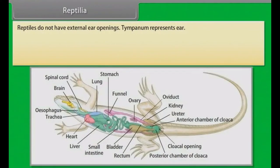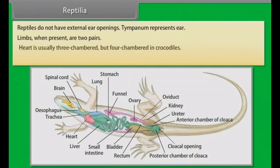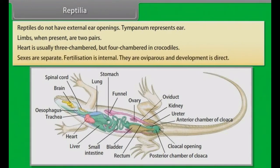Reptiles do not have external ear openings; the tympanum represents the ear. Limbs, when present, are two pairs. Heart is usually three-chambered but four-chambered in crocodiles. Sexes are separate. Fertilization is internal. They are oviparous and development is direct.